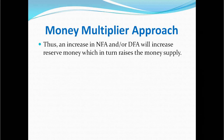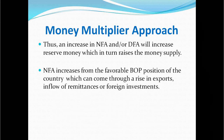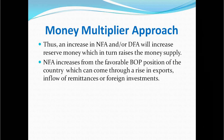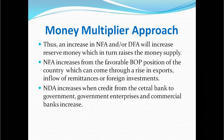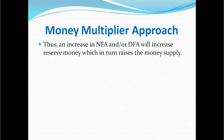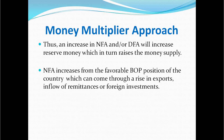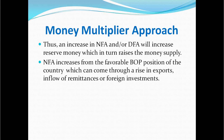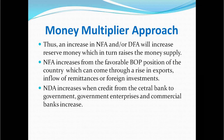An increase in net foreign assets and/or net domestic assets will increase reserve money, which in turn raises money supply. NFA increases from a favourable balance of payments position, which can come through a rise in exports, inflow of remittances, or foreign investment. NDA increases when credit from the central bank to government, government enterprises, and commercial banks increases. Thus, increasing NFA and/or NDA will increase reserve money and in turn raise money supply.